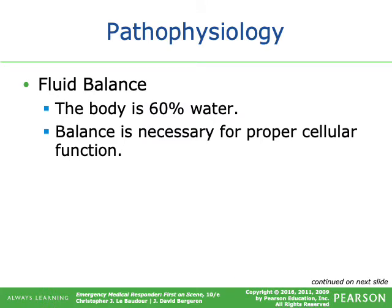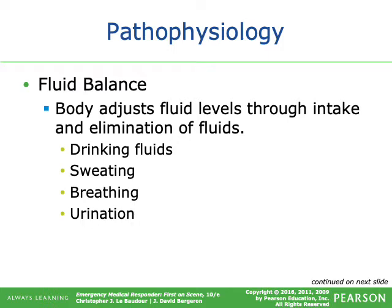The average human body is made up of about 60% water — balance is necessary for proper cellular function. The body's percentage of water is variable depending on body composition, ranging from about 50% to 70%, but for purposes of this class the correct answer is 60. The body adjusts fluid levels through intake and elimination: you take fluids in by drinking and through food, and lose fluid through sweating, breathing, and urination.